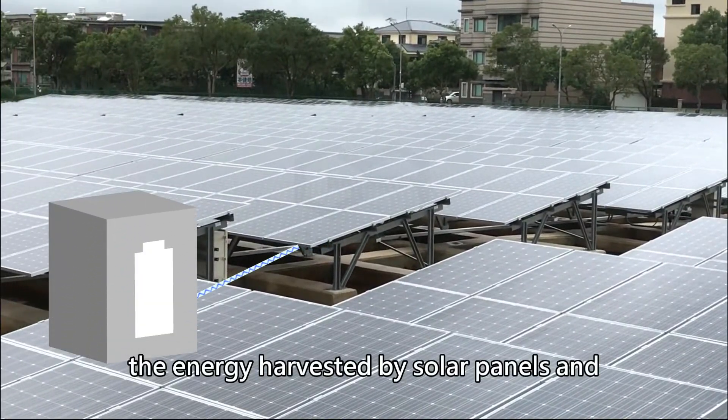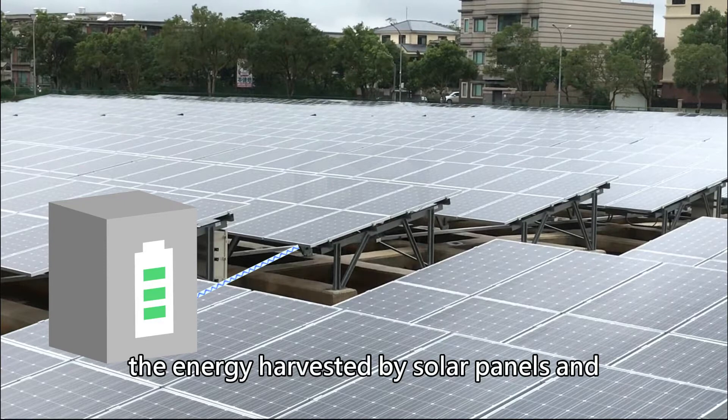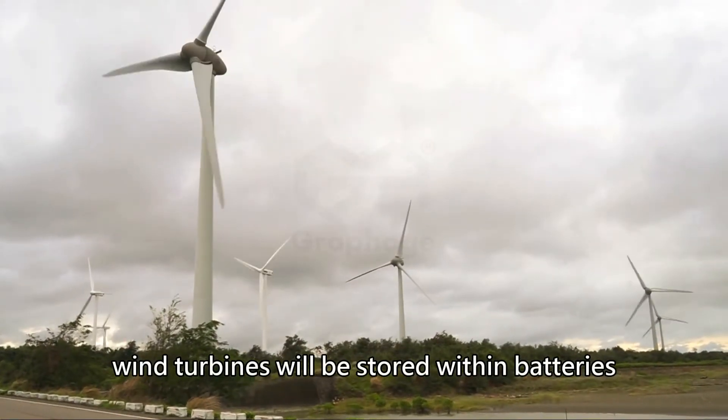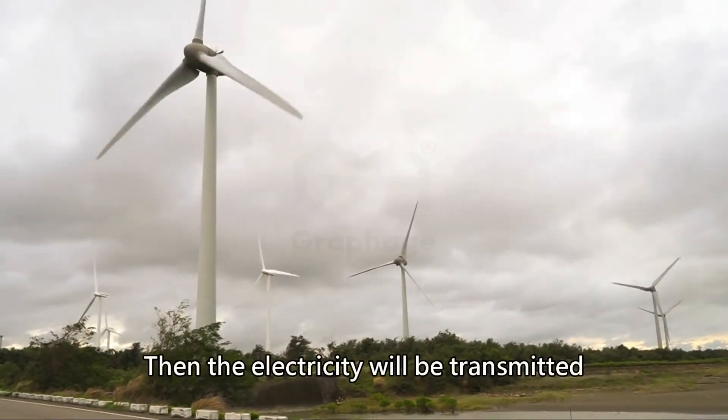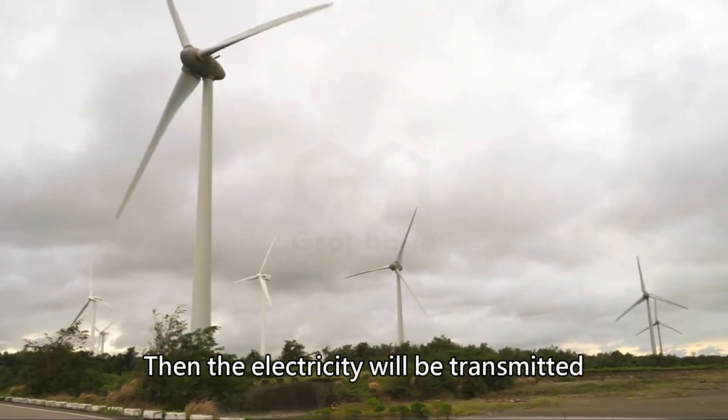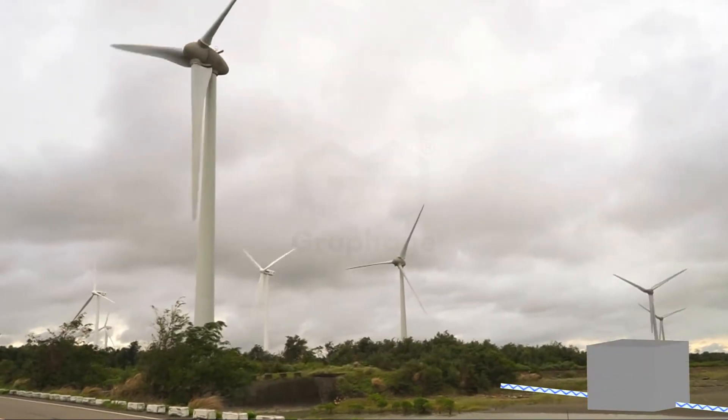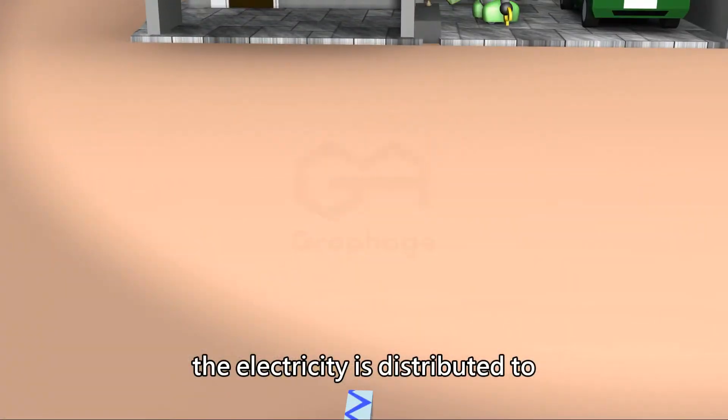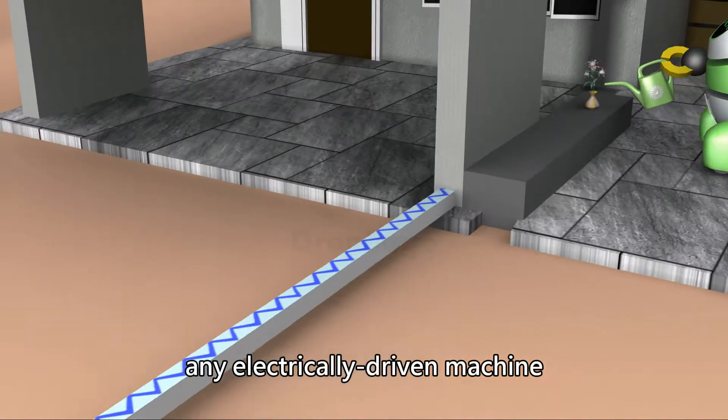Normally, the energy harvested by solar panels and wind turbines will be stored within batteries. Then the electricity will be transmitted to places in need. Afterwards, the electricity is distributed to any electrically driven machine.